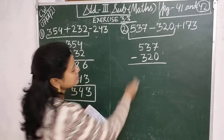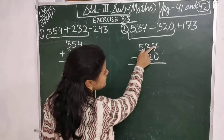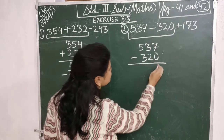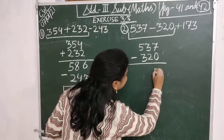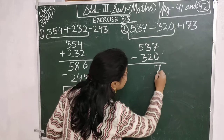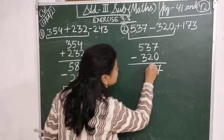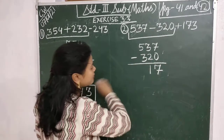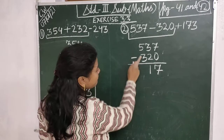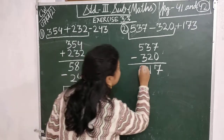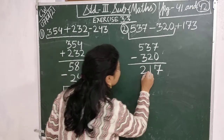In the ones place, 7 and 0: 7 minus 0 is 7, so I will write here 7. Then 3 minus 2 is 1, so I will write here 1. Then 5 minus 3 is 2, so I will write here 2.